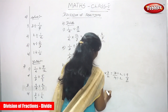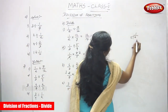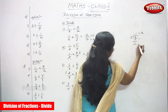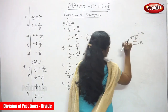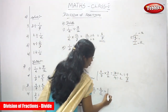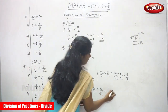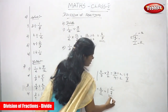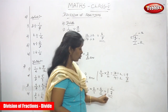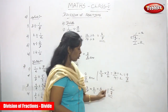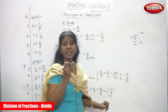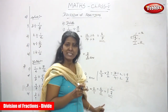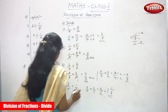Since 6/5 is an improper fraction, convert it to a mixed number. Divide 6 by 5: 5 goes once into 6, remainder 1. The quotient 1 is the whole number, the remainder 1 is the numerator, and the divisor 5 is the denominator. So the answer is 1 and 1/5 — a mixed fraction made of a whole number and a proper fraction.